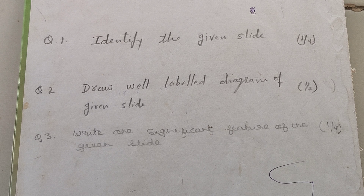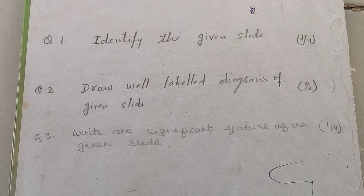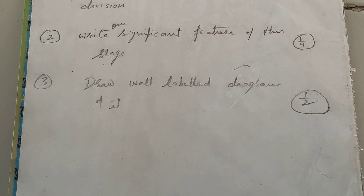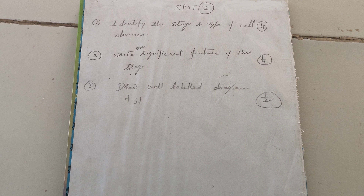After identifying the slide, in the second question you have to draw a labeled diagram. In the examination during spotting, there is no need to use a pencil, because it will take time — for every spot you will get hardly five minutes to complete it. So there is no need to draw a neat and clean diagram; only a rough diagram with labeling is compulsory. After that, you have to write one significant feature.